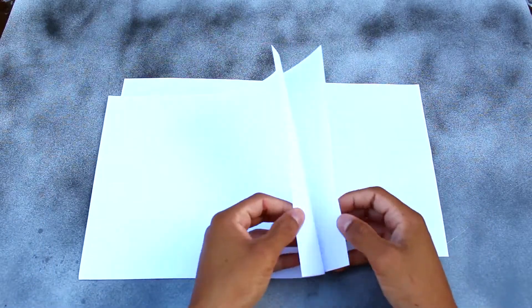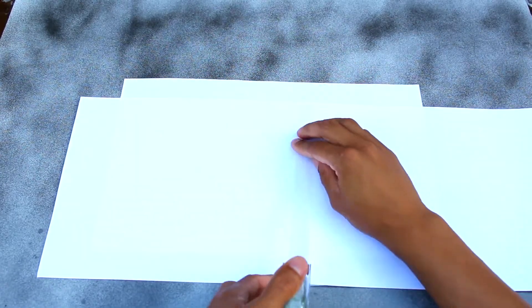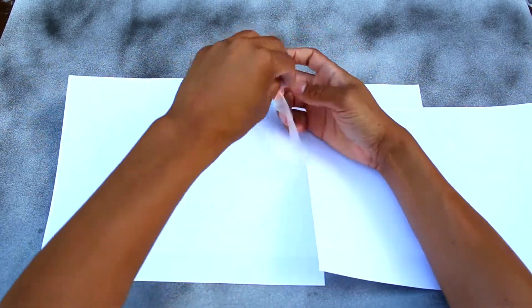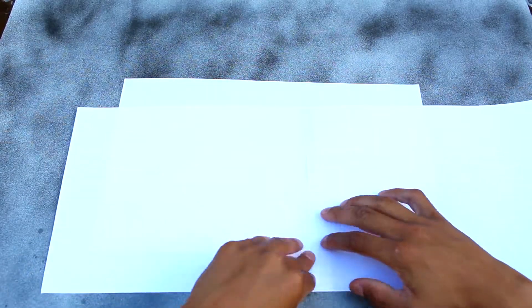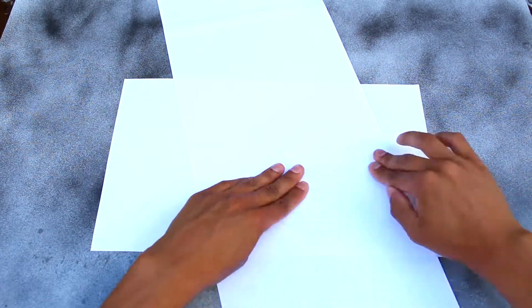To start off I get three sheets of paper and I'm going to tape them together. This is going to be the barrel of our cannon. Make sure to tape both sides. I only taped one side, but you should tape both sides to make it work properly.